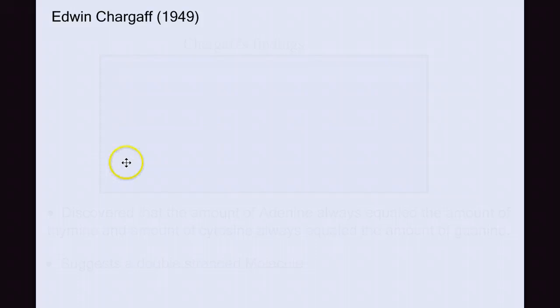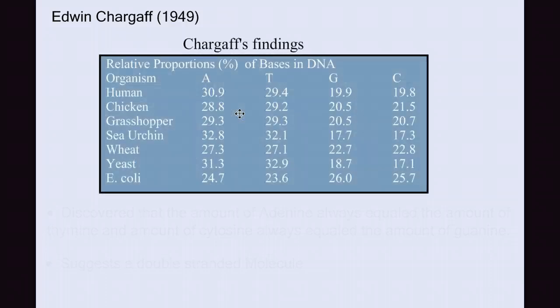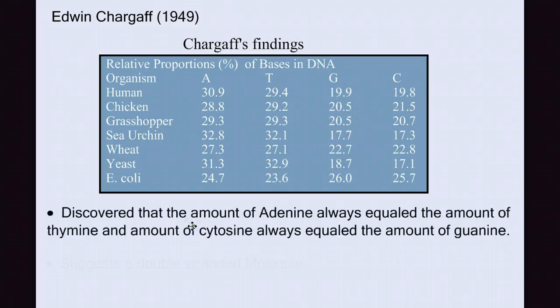In 1945, or 49, Edwin Chargaff was investigating the makeup of cells and the relative proportions of these nitrogenous bases, adenine, thymine, guanine, and cytosine. And he looked across all different types of species, from bacteria to fungus to plants and animals. And he found that no matter which type of organism he found, that there was a consistency in the DNA, that the percentage of the DNA that was made of adenine was always very similar to almost exactly the same as thymine, and guanine was equal to cytosine. So he discovered this equality of adenines to thymines and cytosines to guanines, which suggested a double-stranded molecule.